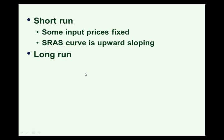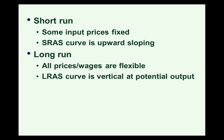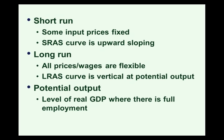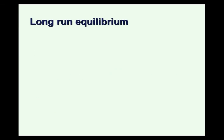In the long run, however, that's going to change. All prices and wages are flexible, so a higher price of final output doesn't mean a higher profit margin. The long run aggregate supply curve is vertical at potential output. Potential output refers to full employment output — the level of real GDP that corresponds to full employment, which means zero cyclical unemployment.